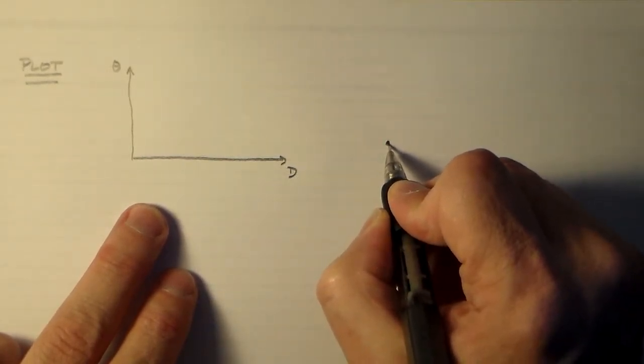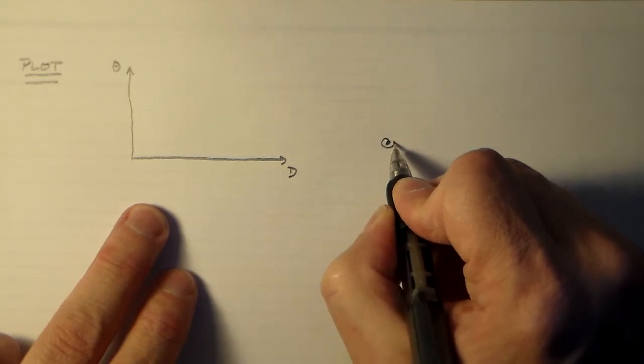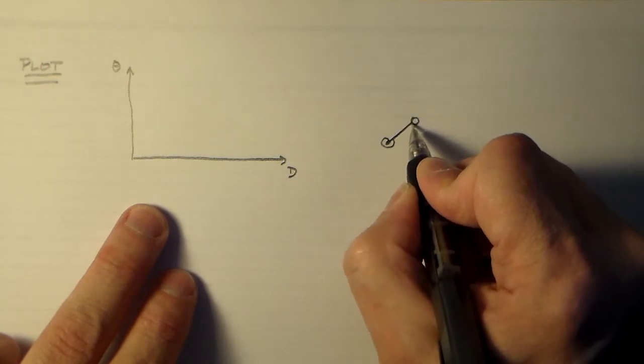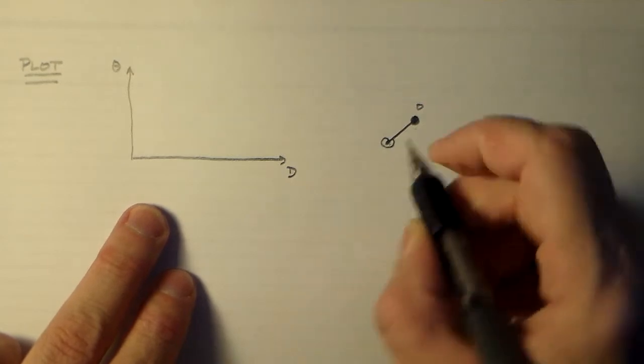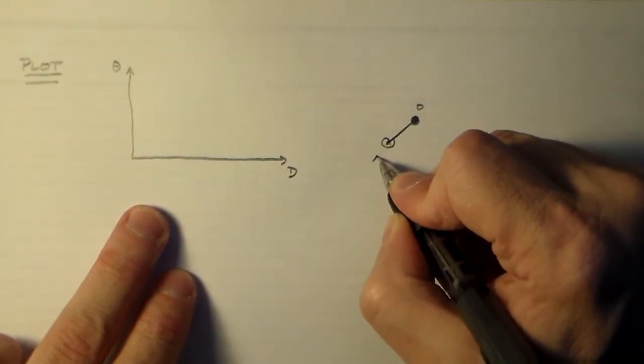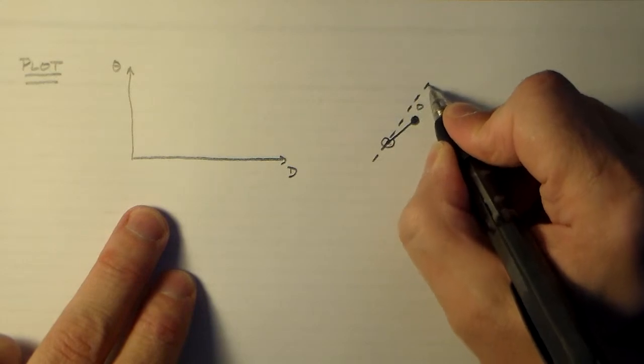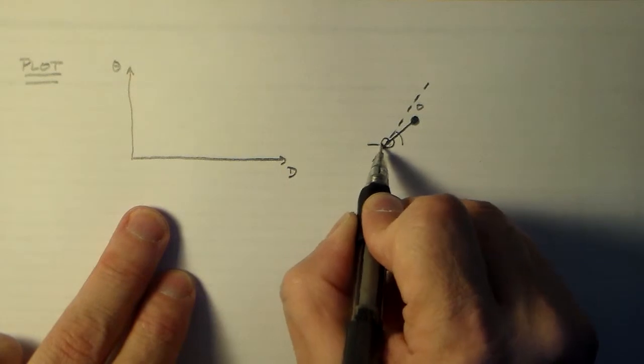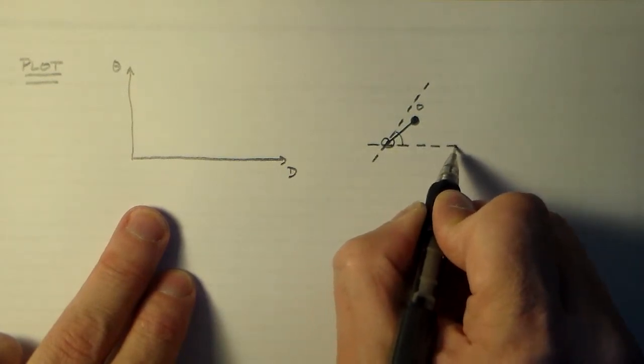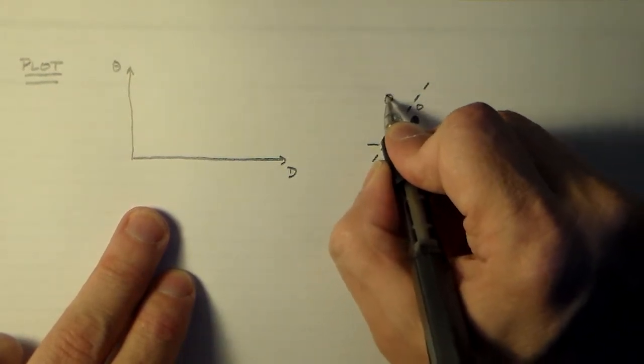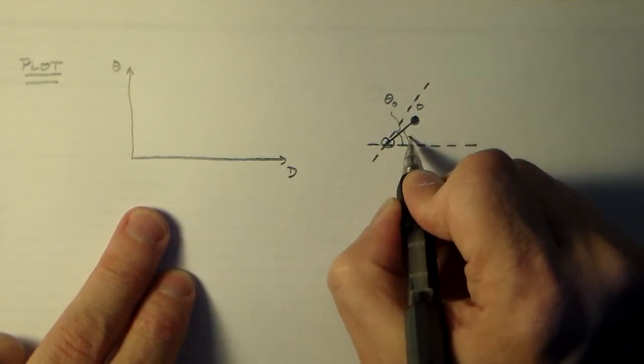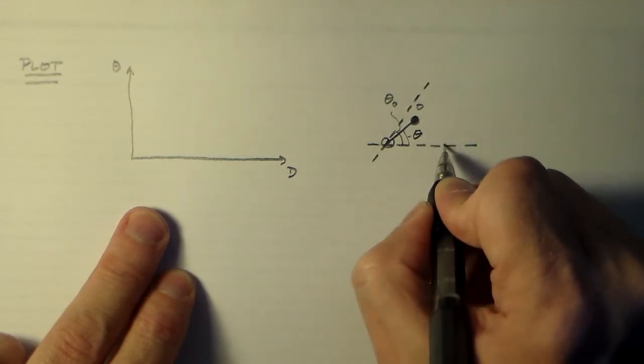So you remember that physically we had a torsion spring attached to a rod, and at the end of the rod we had our object O. And that torsion spring had this angle here with respect to the x-axis. And so that is theta zero, the equilibrium angle.